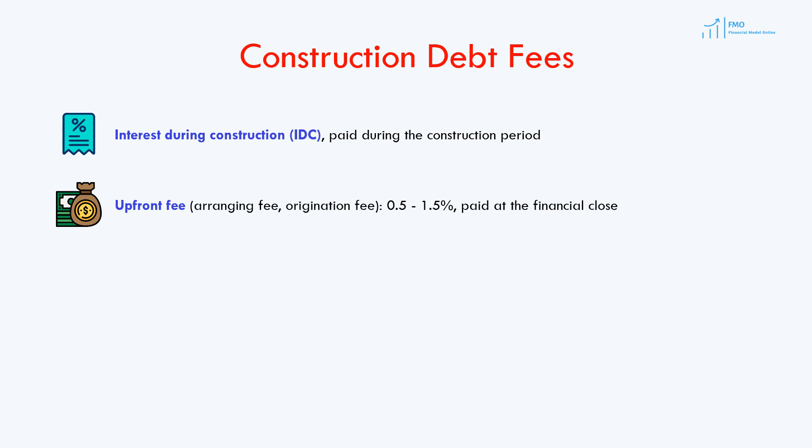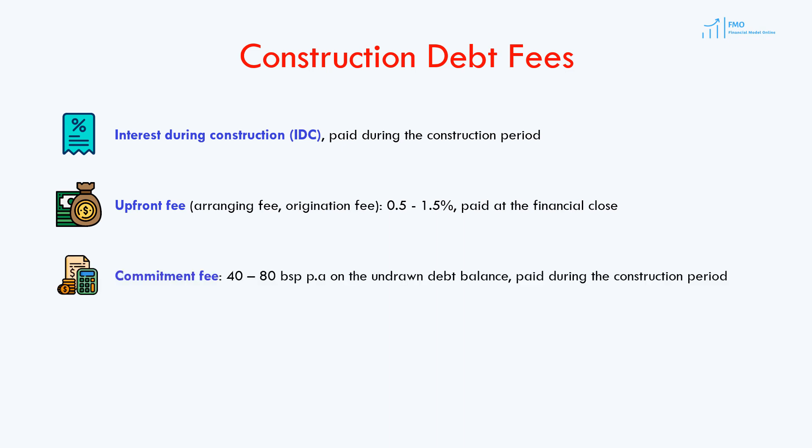The upfront fee is sometimes called an arranging fee or origination fee, and it is typically 0.5% to 1.5% of the loan amount, payable at the financial close. Since lenders will be committing a construction loan to the project from the start, they will want to receive compensation for that commitment — this is called a commitment fee. The commitment fee is typically in the range of 40 to 80 basis points per annum, based on the undrawn debt balance, and it is paid during the construction period. Sometimes, the project company will also have to pay an agent bank fee.